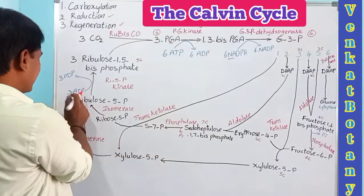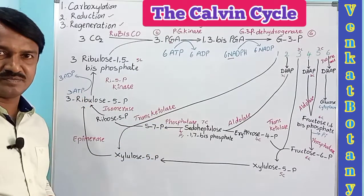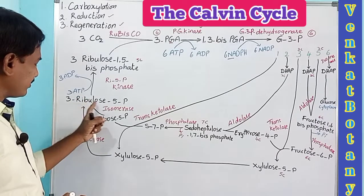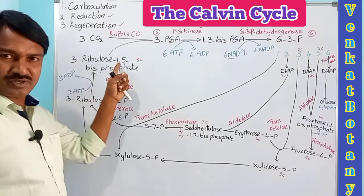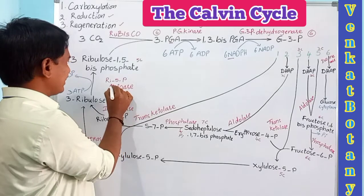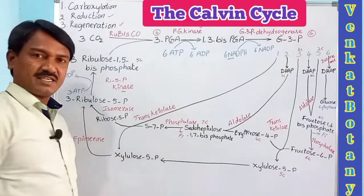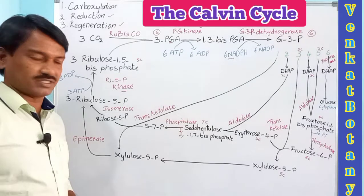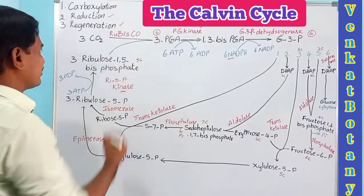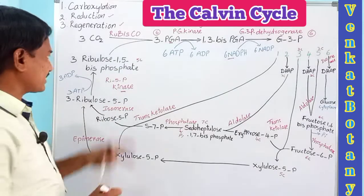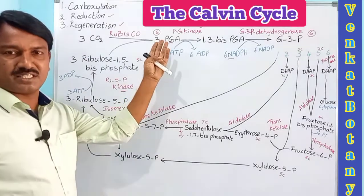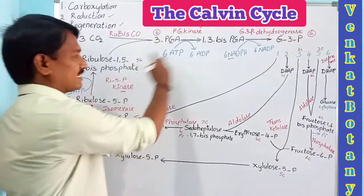The three molecules of RuBP are regenerated and again combine with carbon dioxide to form 3-phosphoglyceric acid - it is a continuous process. When three CO2 molecules enter the Calvin cycle, six ATPs are utilized in reduction and three ATPs in regeneration, totaling nine ATPs. Six NADPH2 are also utilized.